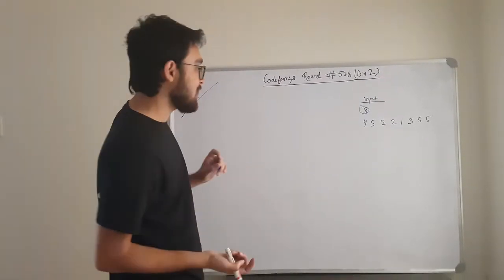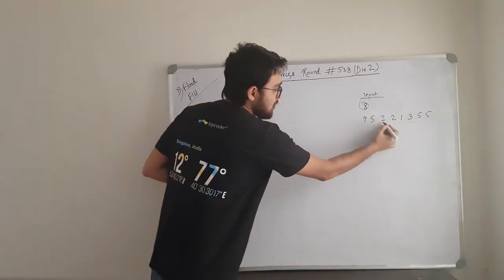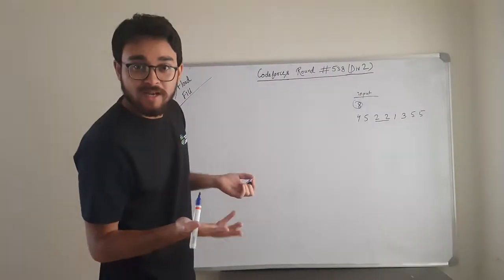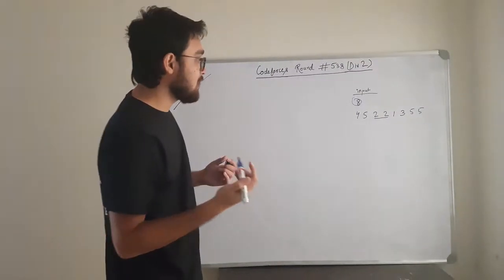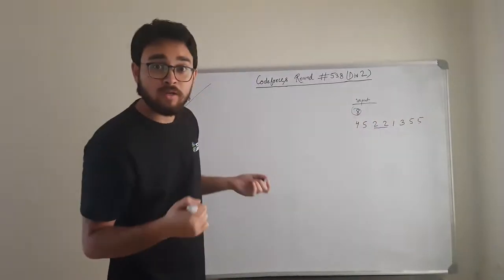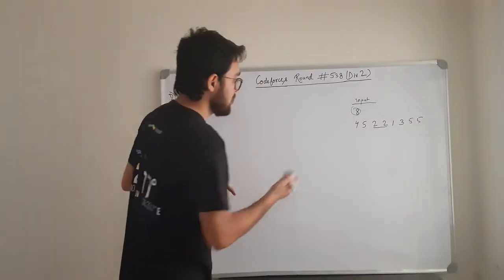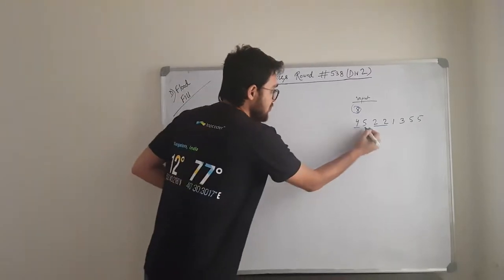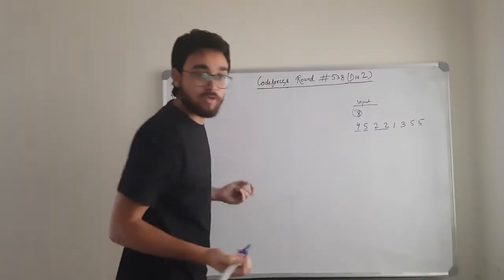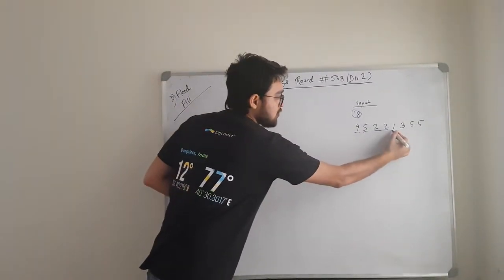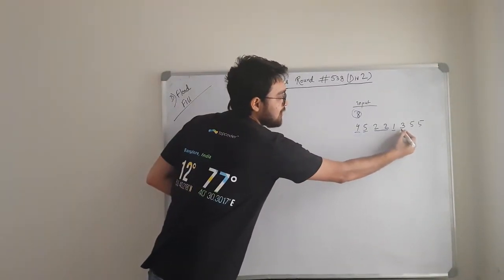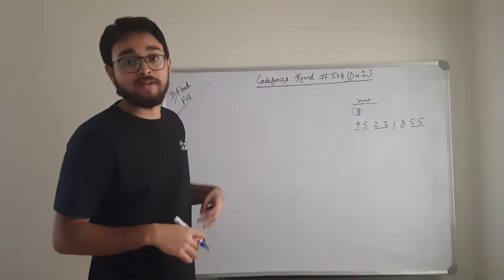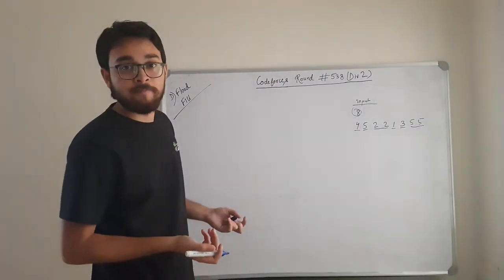What do we mean by that? These two are adjacent to each other and have the same color, so these two belong to one component. Similarly, this 4 belongs to one component, this 5 belongs to one component, this 1 belongs to one component, this 3, and these two 5s belong to another component.